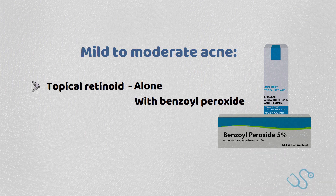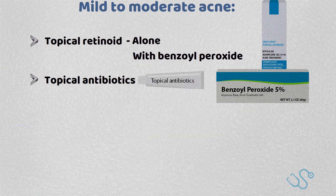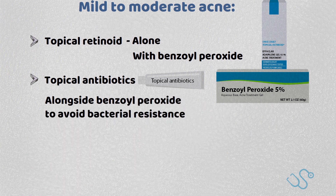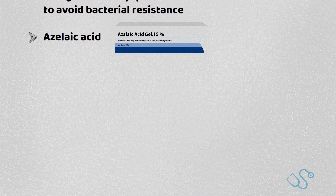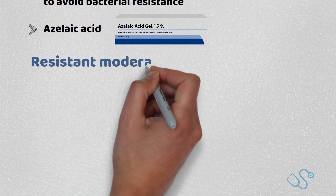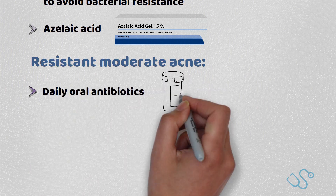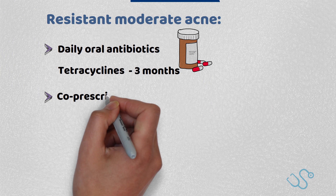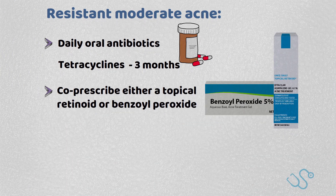Retinoids should be avoided in pregnancy and breastfeeding. Topical antibiotics could also be considered, but should always be prescribed alongside benzoyl peroxide to avoid bacterial resistance. Azelaic acid is also another option. For resistant moderate acne, consider adding daily oral antibiotics, usually tetracyclines, for up to 3 months. Remember, it's best practice to co-prescribe either a topical retinoid or benzoyl peroxide to avoid bacterial resistance.